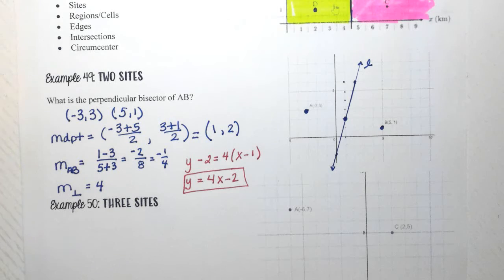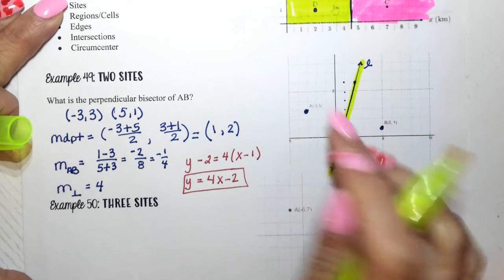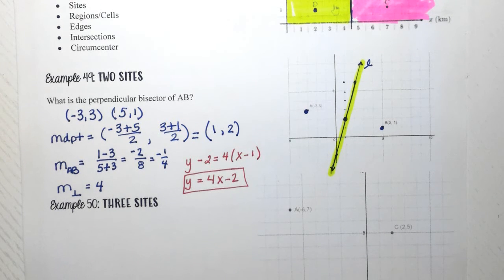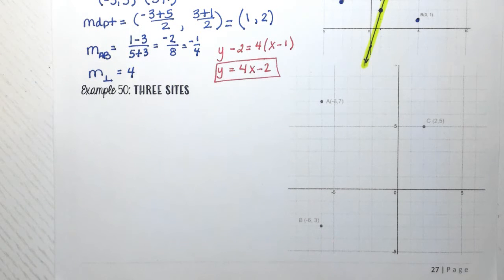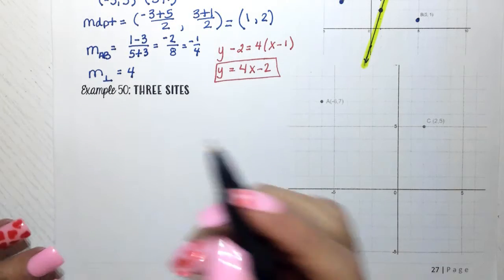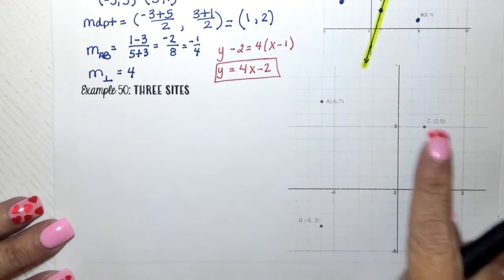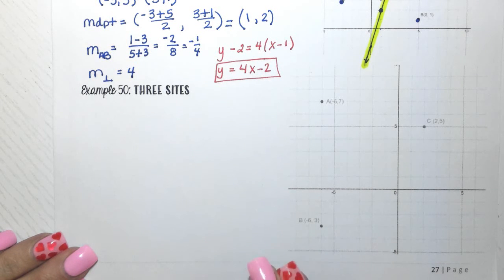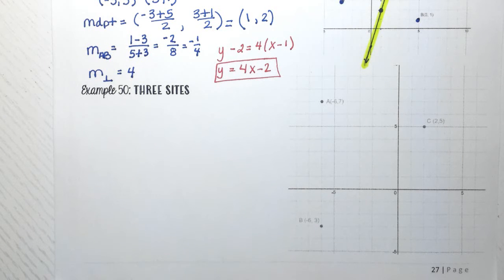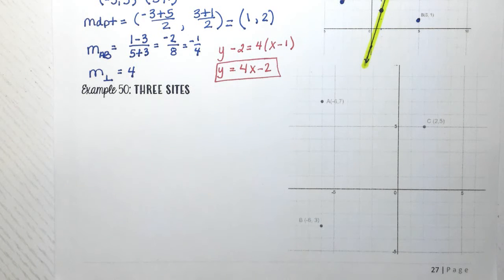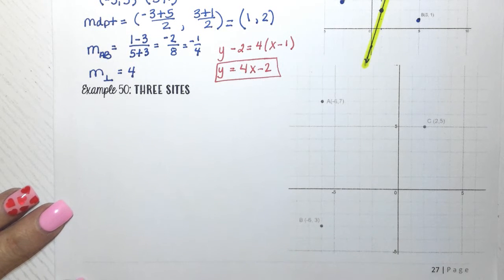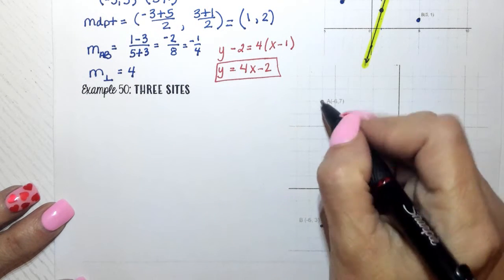If I was doing a Voronoi diagram, this would be the edge and it divides it into two different regions. We don't usually have just two — normally we do a Voronoi with a minimum of three. So we're going to do one with three points instead of just two. I can see A at (−6, 7), B at (2, 5), and C at (−6, 3). What I want to do is create a Voronoi diagram — I need to find the perpendicular bisector between each of these sites and then graph it. Let's start with A and B.